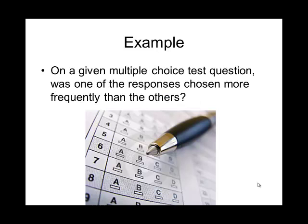Another example with more than two options would be if you were asking on a given multiple choice question, was one of the responses chosen more frequently than the others? In most multiple choice tests, you have four options. In the null world, you would expect that 25% of people would choose A.